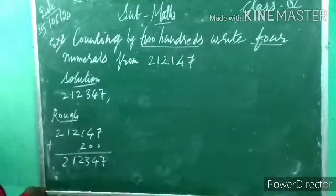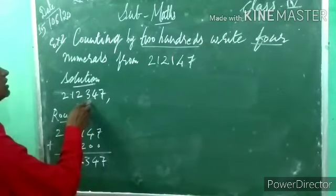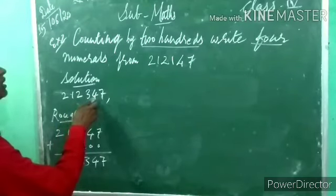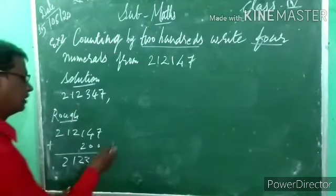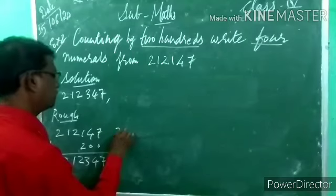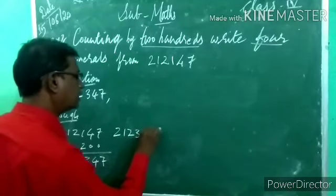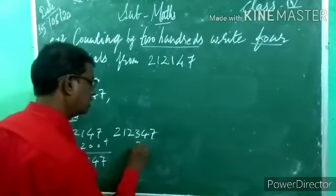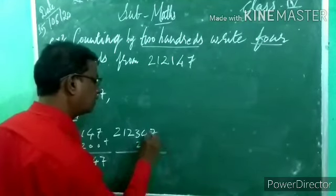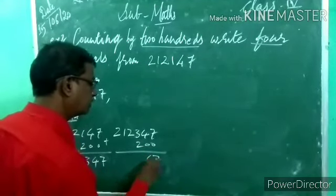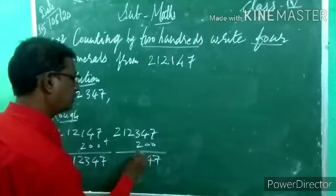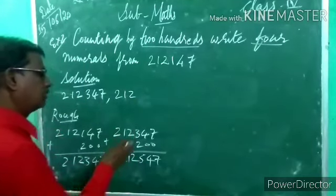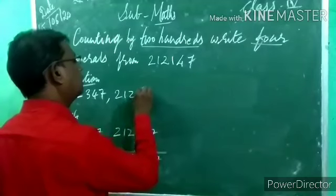Now in this number again add 200. 2,12,347 plus 200: 7 plus 0 is 7; 4 plus 0 is 4; 3 plus 2 is 5; remaining 2, 1, 2 stay the same. So 2,12,547. After 547, again add 200: 2,12,547 plus 200: 7 plus 0 is 7; 4 plus 0 is 4; 5 plus 2 is 7; remaining 2, 1, 2 — gives 2,12,747.